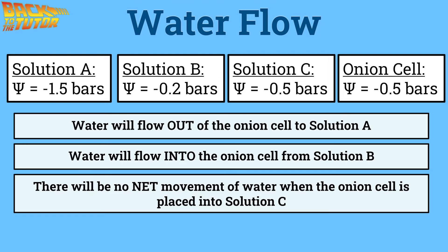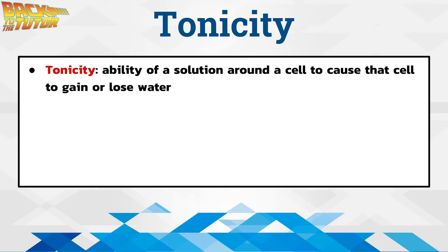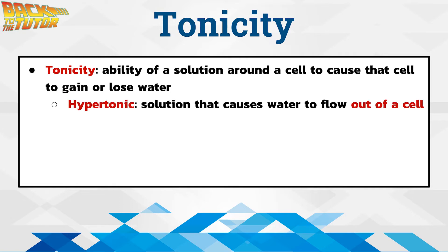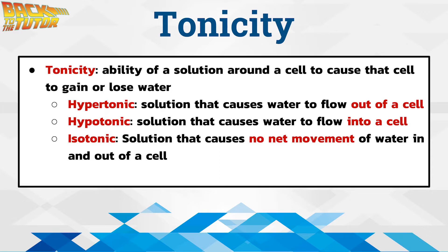If the onion cell were placed in solution C, there would be no net movement of water, because the onion cell and solution have the same water potential. Water is still moving across the membrane, it's just happening at a roughly equal rate both in and out, so there's no net movement of water. A concept related to water potential is tonicity, which measures the ability of a solution around a cell to cause that cell to gain or lose water. A hypertonic solution causes water to flow out of a cell, a hypotonic solution causes water to flow into a cell, and an isotonic solution causes no net movement of water. It's important to keep in mind that these terms are all relative — a solution can be hypertonic to one cell but hypotonic to another.